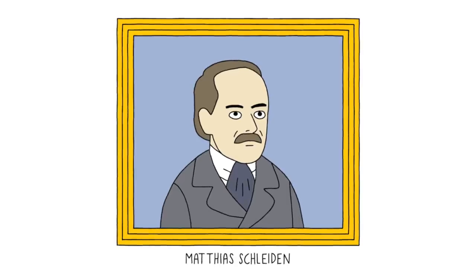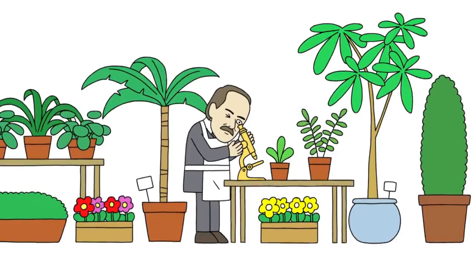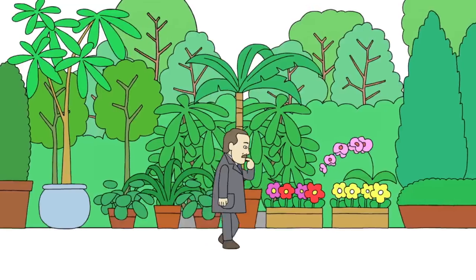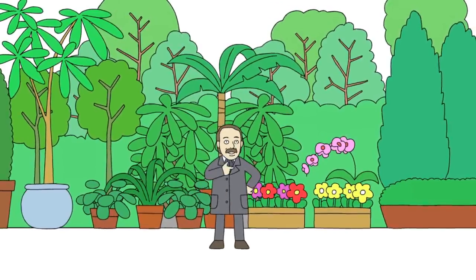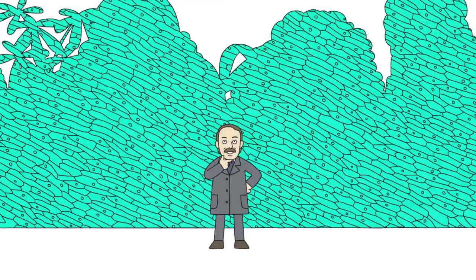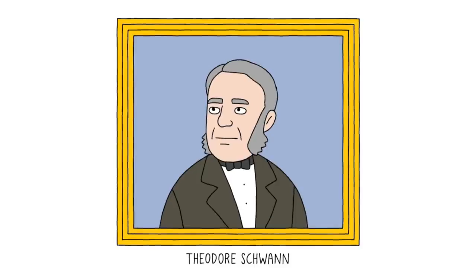The first scientist was Matthias Schleiden, a botanist who liked to study plants under a microscope. From his years of studying different plant species, it finally dawned on him that every single plant he had looked at were all made of cells. At the same time,